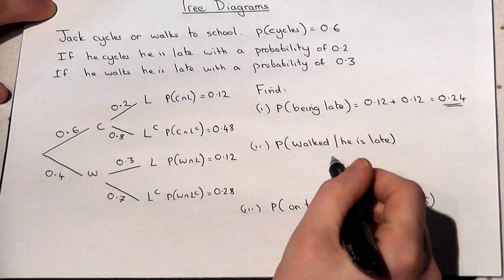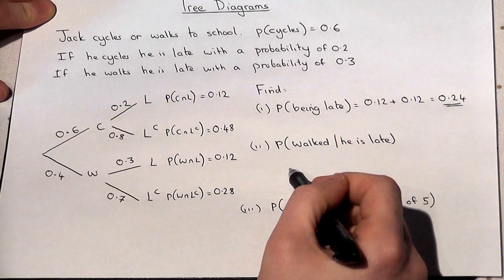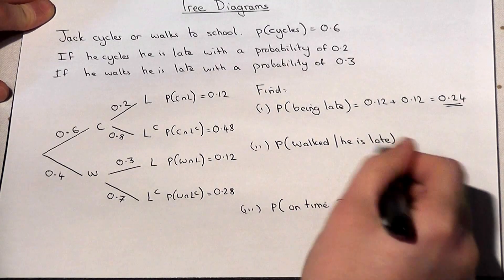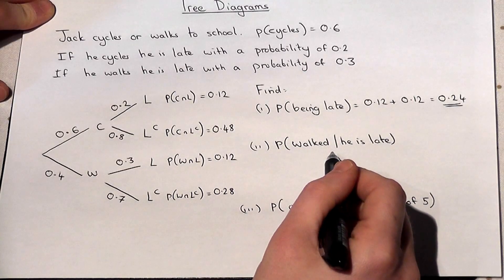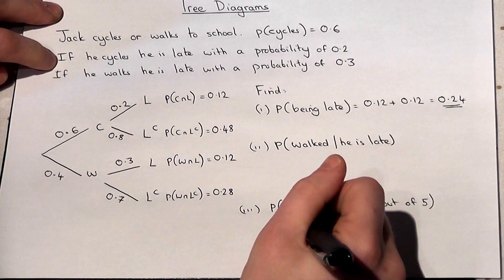Now the second question is a bit trickier. It's a conditional question. He walked given that he is late. So we know he is late. What's the chance that he walked to school? Now then there's a formula for this as follows.